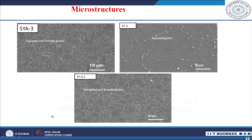The sintered silicon carbide ceramics show different microstructures. SyA3—sintered with 3 weight percent of aluminum nitride and yttrium oxide mixture—showed overall equiaxed grains but with some bimodal grains as well. Where only 3 percent yttrium oxide was used as additive, it shows only equiaxed grains. But when the sintering additive content was decreased from 3 percent to 0.2 percent, there are elongated grains as well as bimodal grains. This shows that with changes in additive content and composition, there is a variation in the microstructures.